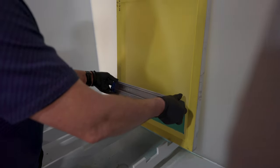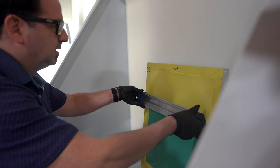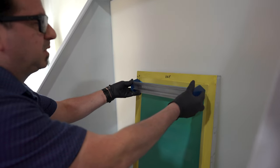One important thing when you're coating screens for textile printing is you want to use the round edge of the scoop coater. This is going to help us to get that proper EOM and that really perfect stencil.